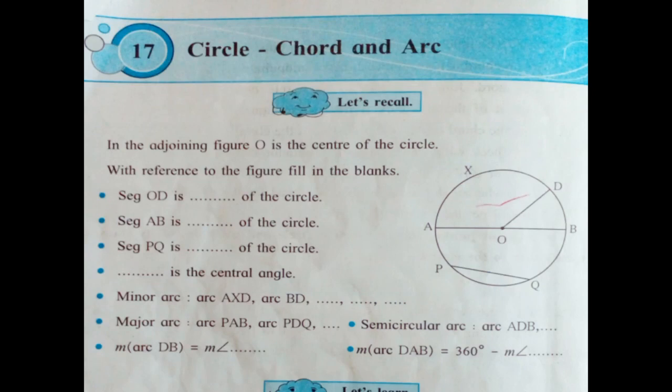Segment OD is ___ of the circle. Segment OD is the radius of the circle.